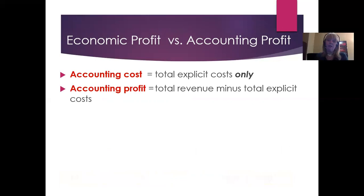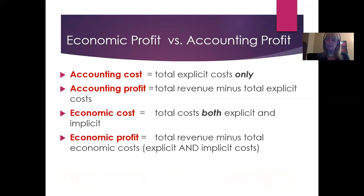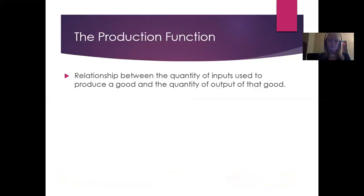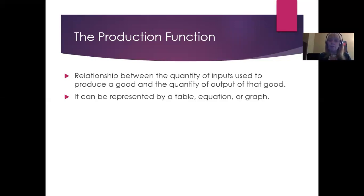Accounting costs look only at explicit costs. Accounting focuses on tracking money — money in, money out, cash flow. Accounting profit is total revenue minus total explicit costs. Economic profit considers the relationship between the quantity of inputs used to produce a good and the quantity of output of that good — what does it take to produce it, and how many can I produce? That relationship can be represented by a table, an equation, or a graph, and we're going to look at all of them.